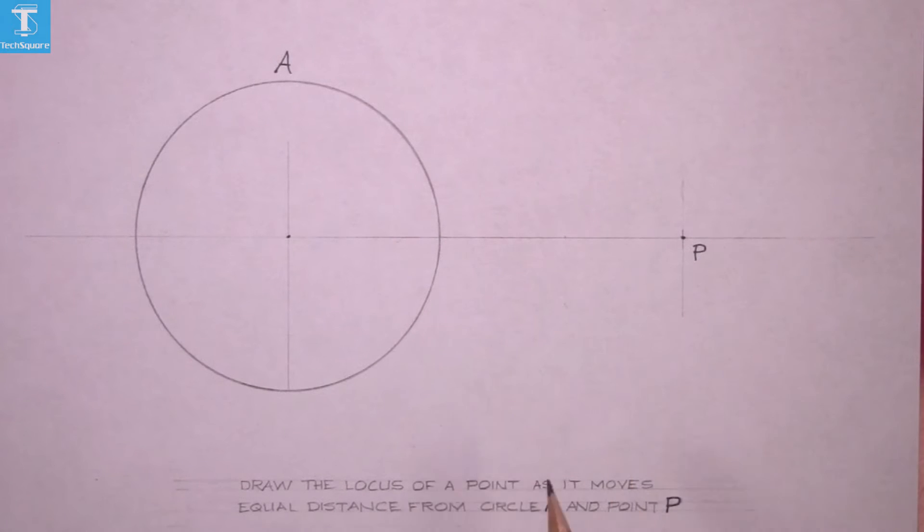So we have circle A here and point P here, so it must be equal distance from circle A and point P.